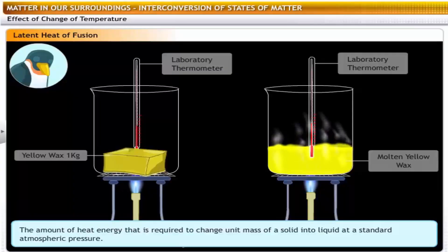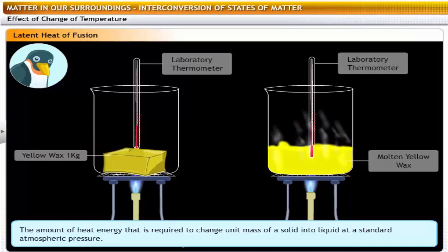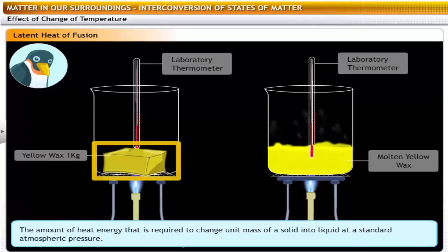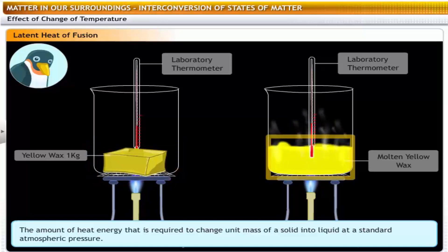The latent heat of fusion for any substance is the amount of heat energy required to change 1 kilogram of the substance from its solid state to its liquid state at the same temperature.